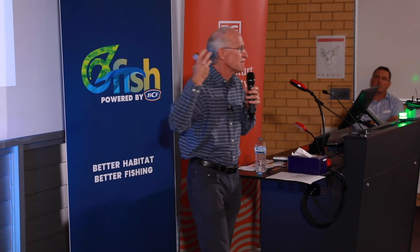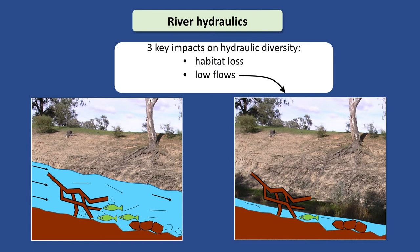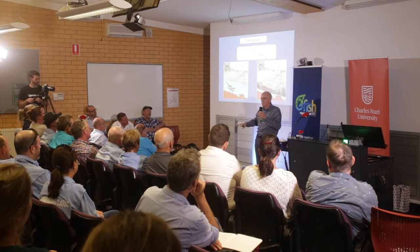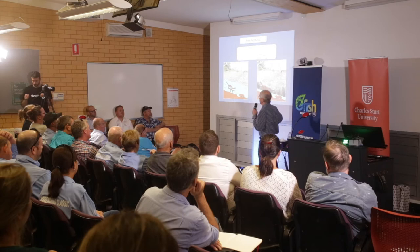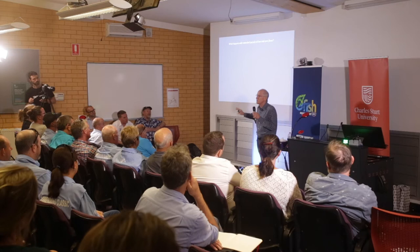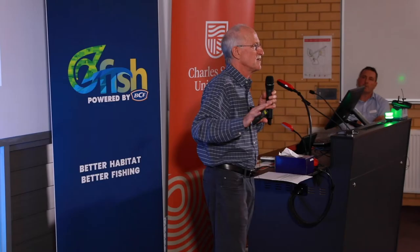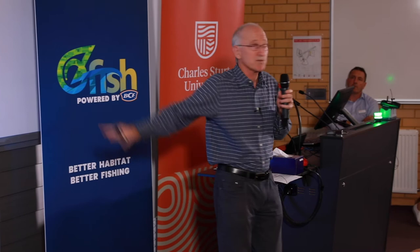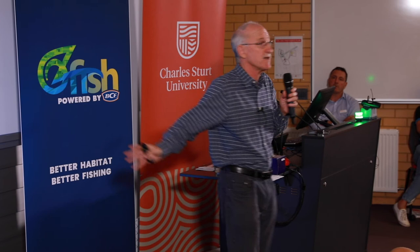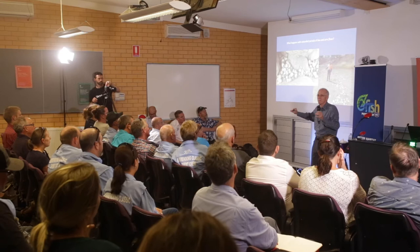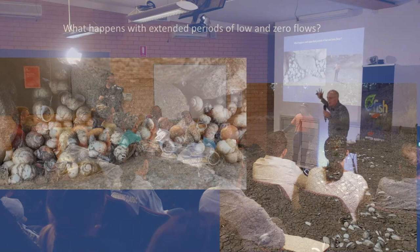There are three key impacts on hydraulic diversity. Obviously, if you take out the habitat, you reduce hydraulic diversity, so putting the habitat back is a huge thing to do. Low flows - now, low flows are a natural part of rivers, but when they become lower than natural and extended for long periods of time, you're losing hydraulic diversity and you're losing fish populations. And with extended periods of low and zero flows, it's not just fish that are dying - there are also river mussels, some as old as Murray Cod, growing for about 30 years. There have been massive mussel kills and snail kills along the Darling. We're looking at a whole ecosystem that's been impacted.